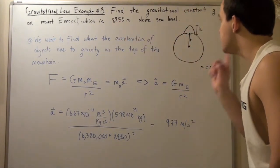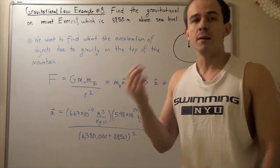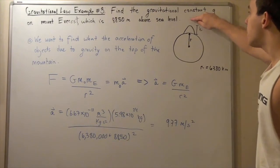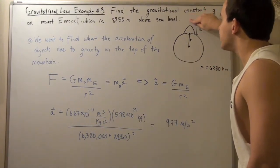So we want to find G, but what is G? G is simply the acceleration of objects dropped at the top of the mountain. We want to find what that G is on top of the mountain.